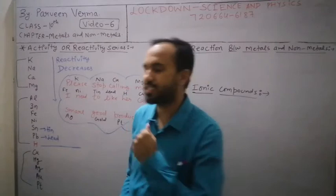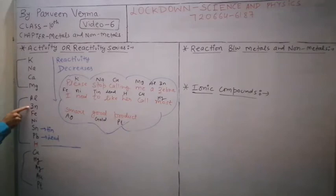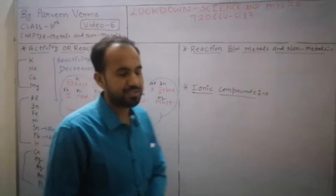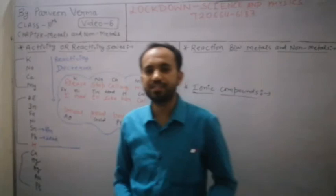For example, they ask: zinc or iron, which is most reactive? Look, between zinc and iron, zinc is above but iron is below, so zinc will be most reactive and iron will be less reactive. But if we compare this same iron with copper, then iron will be more reactive and copper will be less reactive. Why? Because iron is above in this reactivity series and copper is below. So this means whenever you have to compare two metals, always see that the metal which is above is highly reactive, the metal which is below is least reactive.